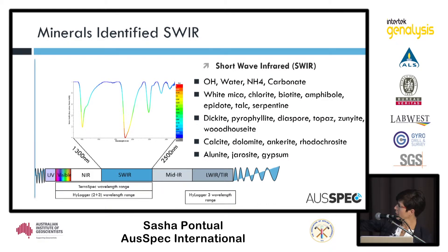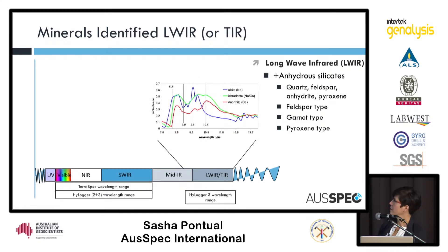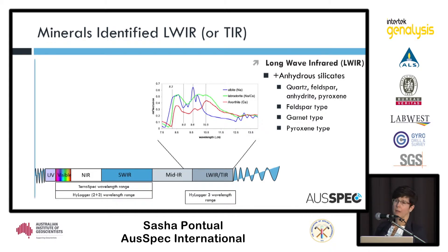Just underneath the cartoon of the electromagnetic spectrum, I've got the wavelength range for the Terraspec, which is the most commonly used spectrometer. We also have the HiLoggers — the HiLogger 2 has the visible near-infrared and short-wave infrared, and the HiLogger 3s have the thermal as well. In the thermal wavelengths we get some of the fundamental vibration features. What we're seeing in the short-wave infrared are basically harmonics or overtones and combinations of what we see in the thermal. In the thermal we can detect all the things visible in the short-wave infrared, but also anhydrous minerals such as feldspars, quartz, and pyroxenes. We can start to pull apart different types of feldspars, garnets, and pyroxenes as well in this part of the spectrum, though there are not so many spectrometers that can give us a response in this region.